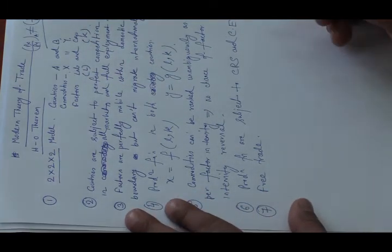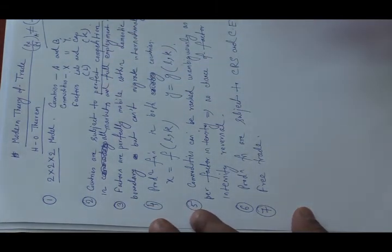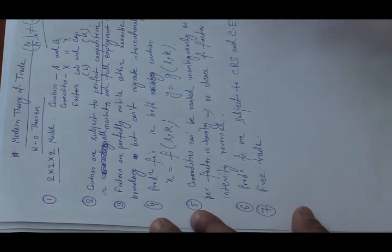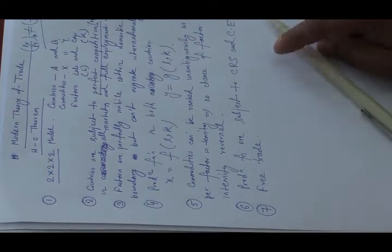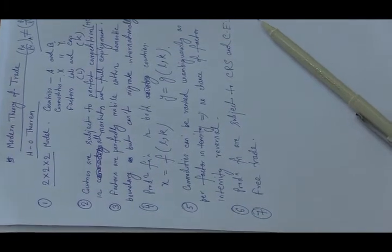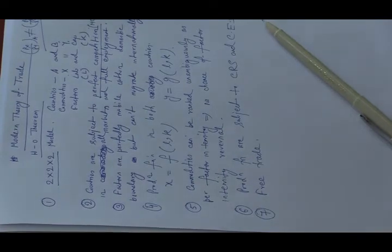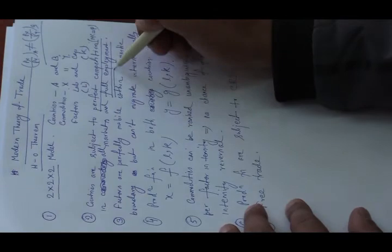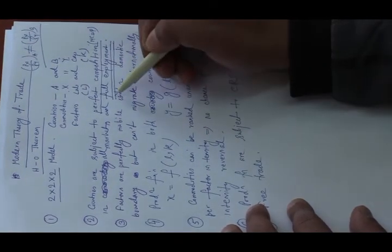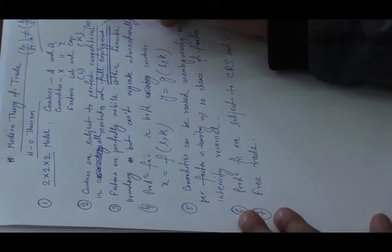The second assumption is that the countries are subject to perfect competition, meaning in each commodity market there will be marginal cost pricing and no supernormal profits. The markets are also at full employment, meaning if a country wants to increase production of X it must reduce production of Y and vice versa, just like in neoclassical theory.